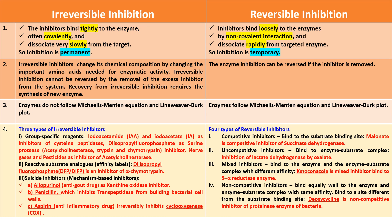There are three types of irreversible inhibitors: group-specific reagents, reactive substrate analogs or affinity labels, and suicide inhibitors or mechanism-based inhibitors. Examples of group-specific reagents are iodoacetamide and iodoacetate as inhibitors of cysteine proteases, diisopropylfluorophosphate as a cysteine protease inhibitor, and nerve gases and pesticides as inhibitors of acetylcholinesterase.